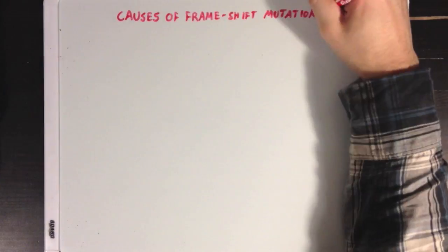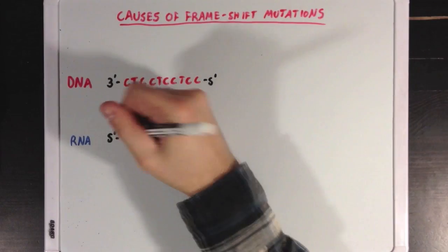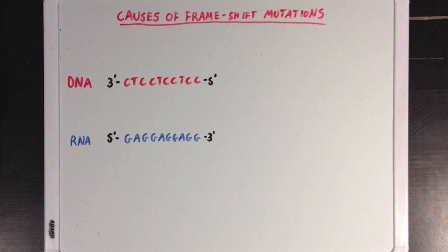Next, we're going to talk about frameshift mutations. So let's say that we have this DNA strand here, with three repeating CTC units, and an extra C on the end. This would then be transcribed into an RNA strand with repeating GAG units, and an extra G on the end. And our three codons would be the three GAG units, which would then each translate to a glutamate amino acid.